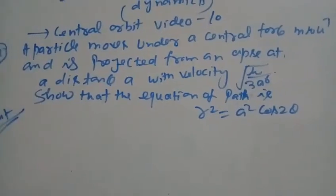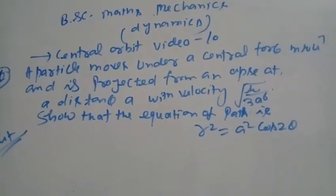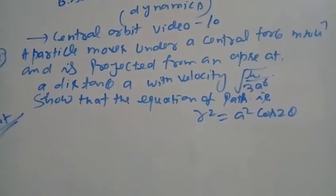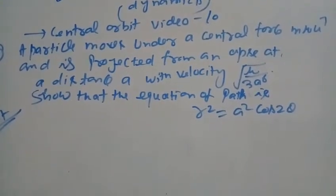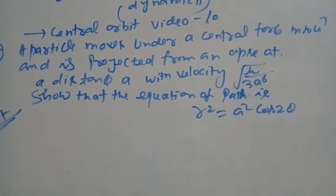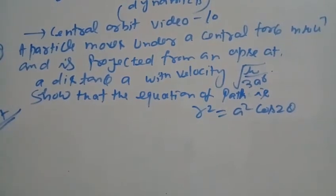In BSc Mechanics and Dynamics, topic: Central Orbits, video number 10. The question is: a particle moves under central force μu⁷ and is projected from an apse at a distance a with velocity √(μ/3a⁶), so that the equation of path is r² = a²cos(2θ). We need to find the solution.